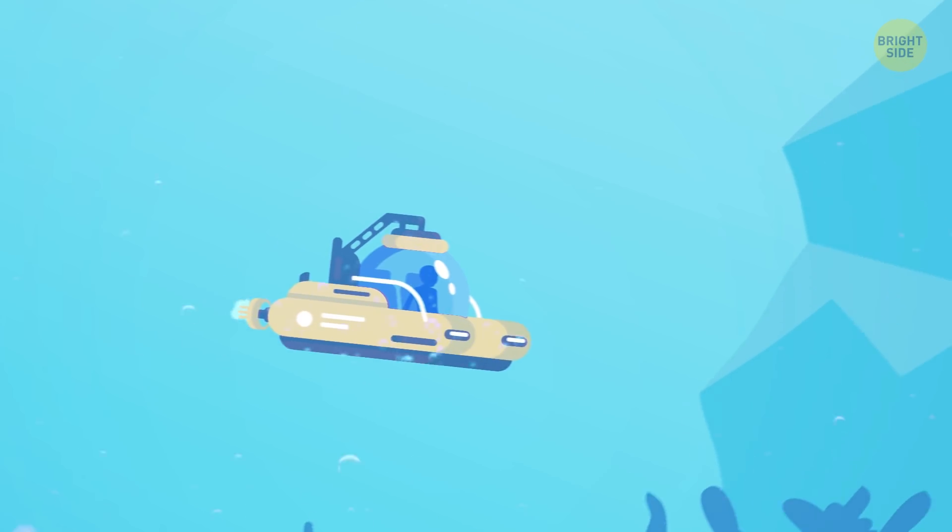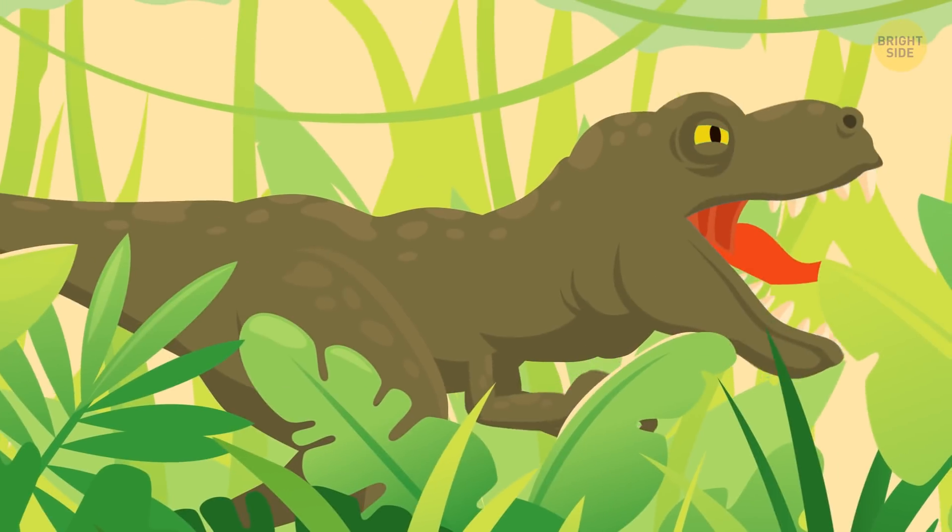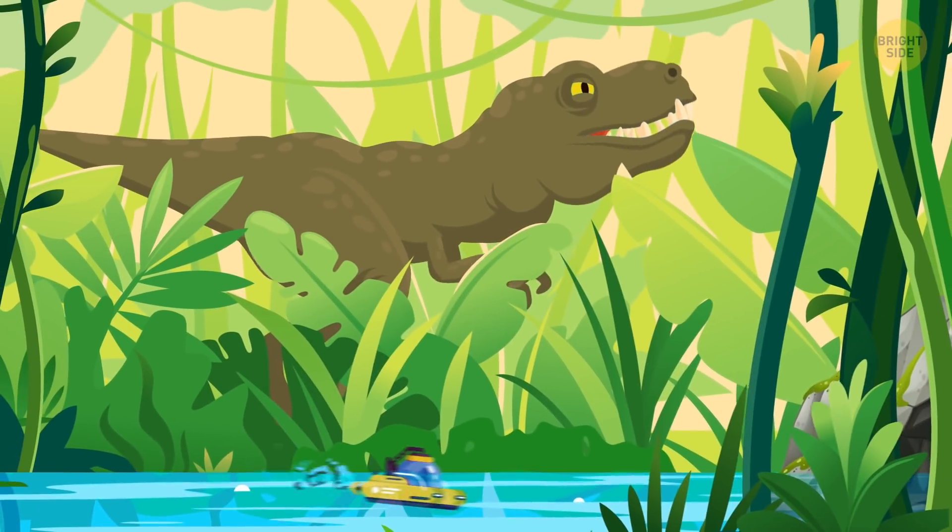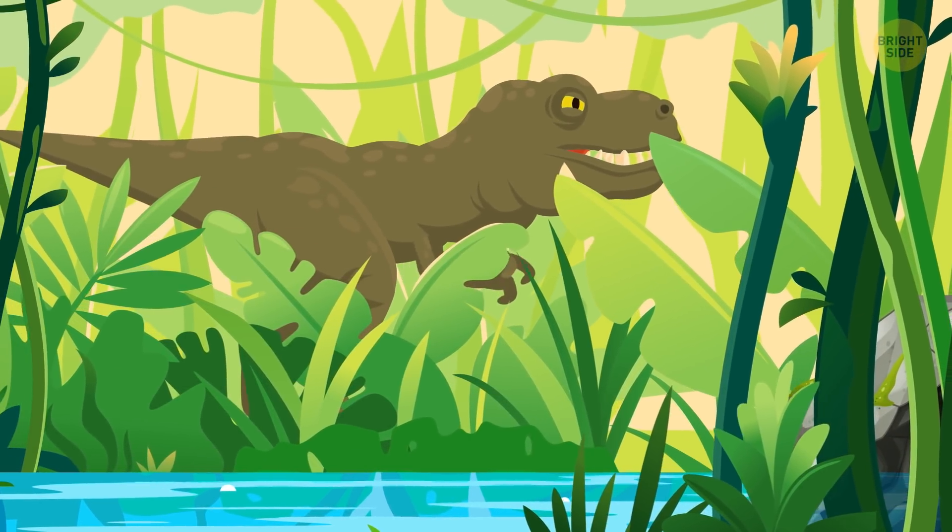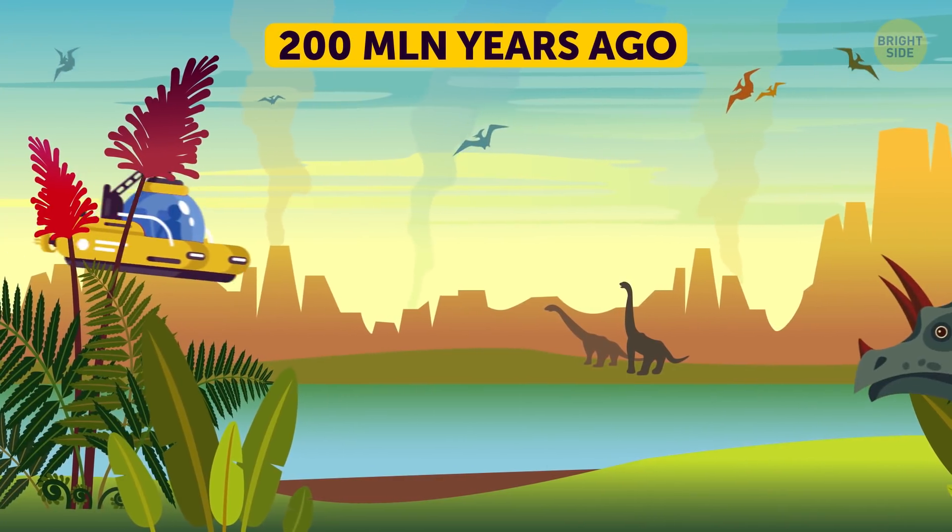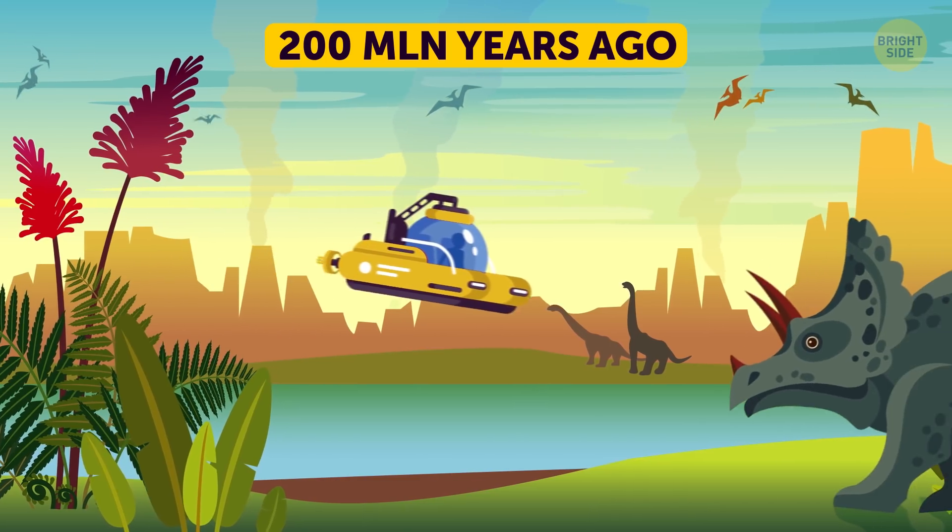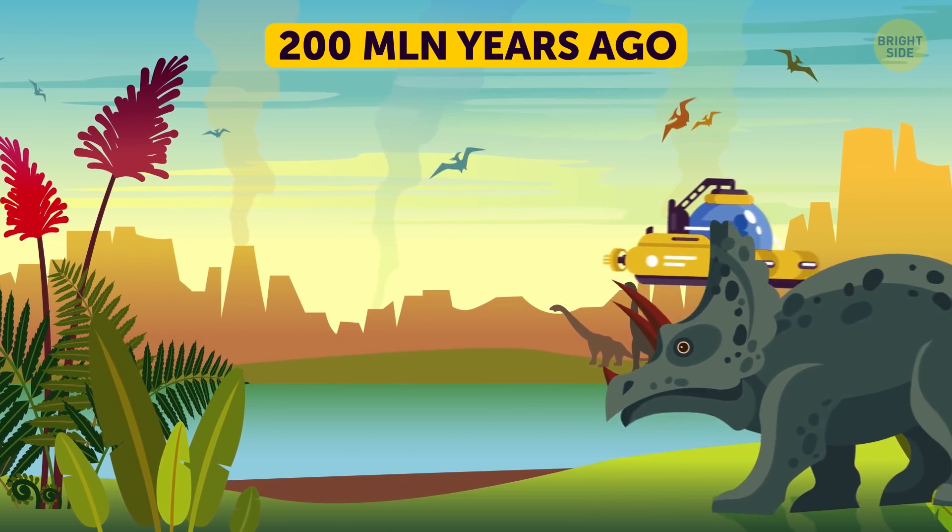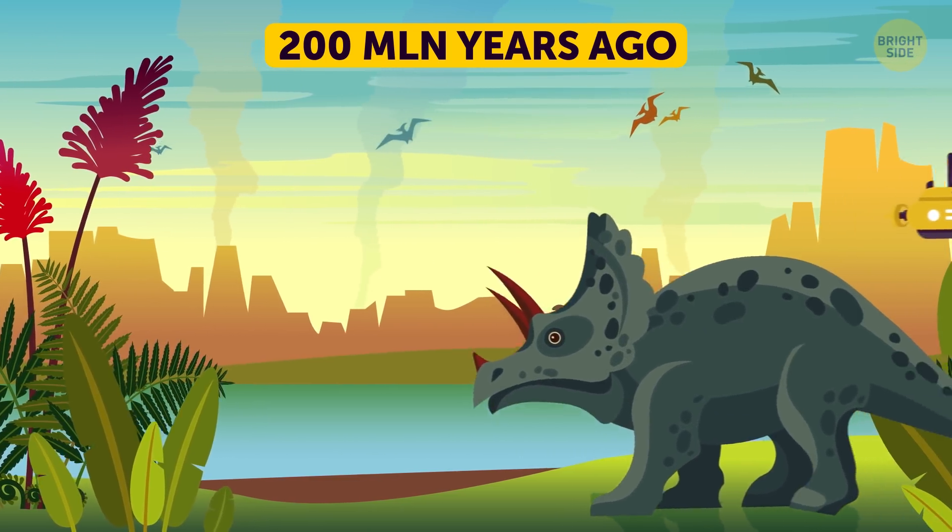Trilobites, crustaceans, and eventually dinosaurs! Run! Quick, let's hide in that cave over there. About 200 million years ago, these giant reptiles appear, and they'll rule the planet for the next 175 million years.